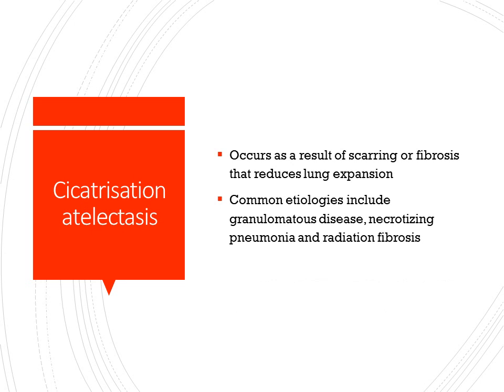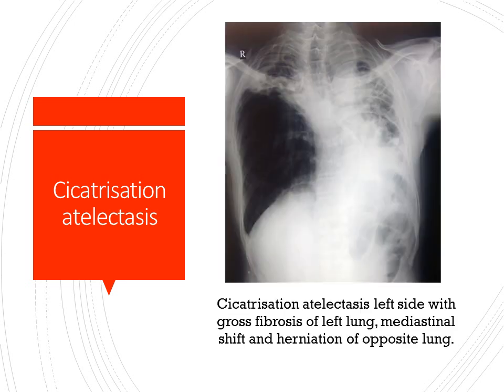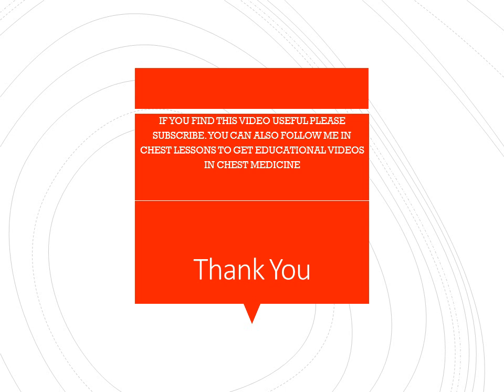Cicatrization atelectasis occurs as a result of scarring or fibrosis that reduces lung expansion. Common etiologies include chronic granulomatous disease like tuberculosis, necrotizing pneumonia, and radiation fibrosis. This is the picture of cicatrization collapse or fibrosis where the whole left lung is fibrosed, with trachea and mediastinum shifted, herniation of the right lung towards the left side, and slight elevation of the right dome of the diaphragm. Thank you very much.